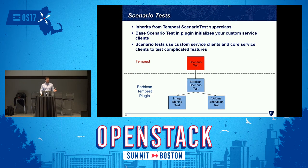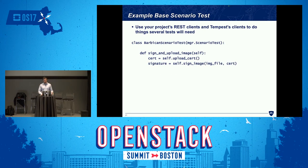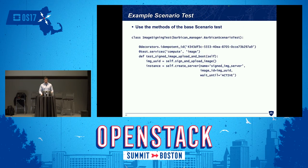Similar to the API class inheritance, it makes things a lot easier if you have a base scenario test that you inherit from — it can help with setup, teardown, and reducing code duplication for things many of your scenario tests will do. Here's an example base scenario test that shows how you'd have a common method that many scenario tests would use. And here's an example scenario test — because a lot of the heavy lifting is done behind the scenes by the Tempest framework, your clients, and your base tests, these scenario tests tend to be pretty short, sweet, and readable.